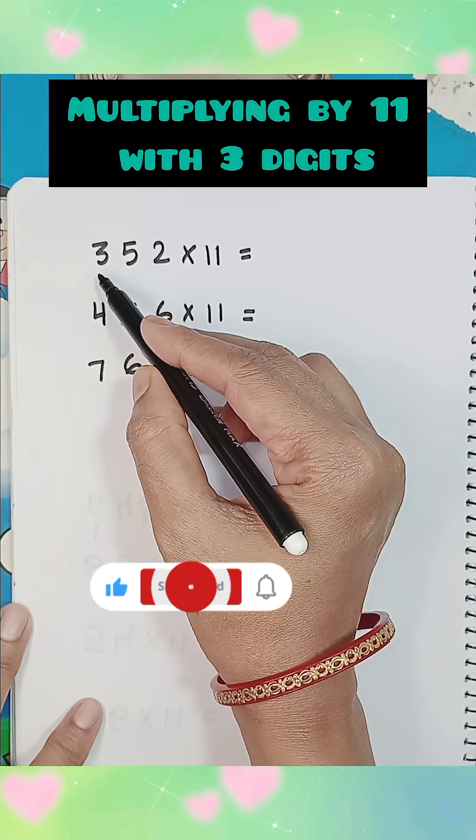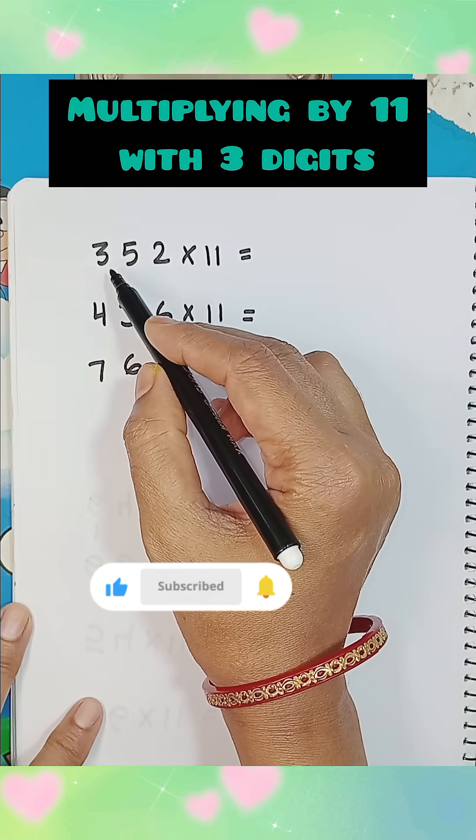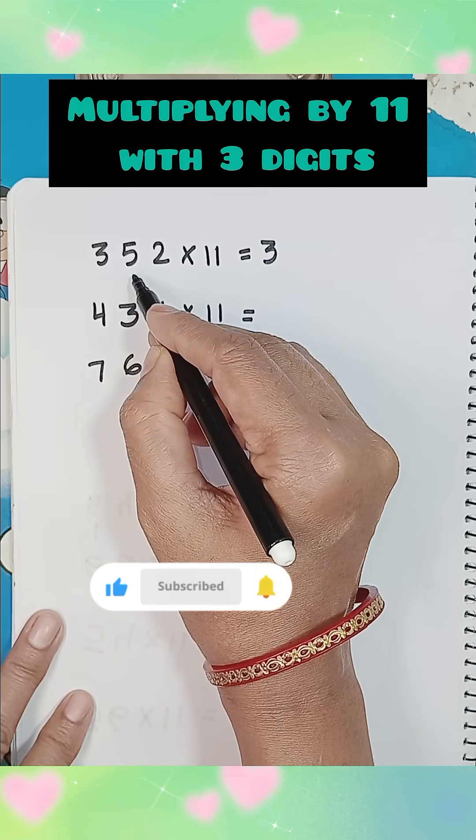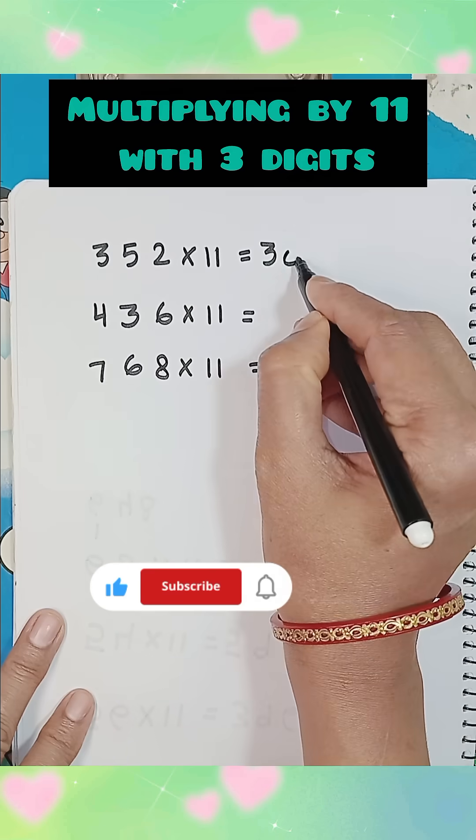To multiply 3 digit numbers like 352 by 11, write the first digit, add 1st and 2nd digit, 3 plus 5, it will be 8.